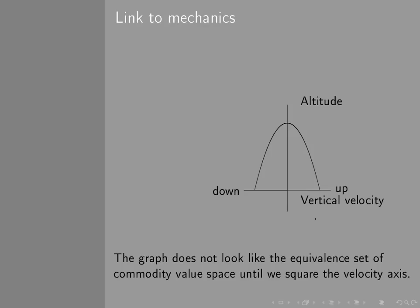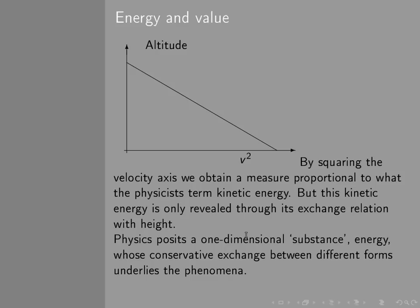They are traced out over time on the phase-space diagram. And that's equivalent to saying these are equivalent or exchangeable with one another. But it doesn't look like the equivalent set of commodity values until we do something. We take the velocity axis and we square it. So if we take that diagram and, for each point, square the velocity axis and re-plot it here, what do we get? We get that diagram in a straight line. By squaring the velocity axis, we get a measure proportional to what physicists call kinetic energy. Now, if you've done physics at school, you'll know about kinetic energy. But this kinetic energy is something that is only revealed through its exchange relation with height.